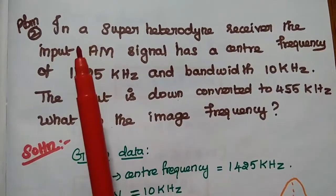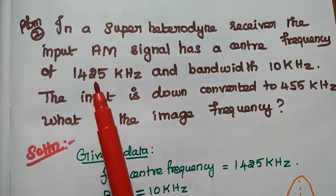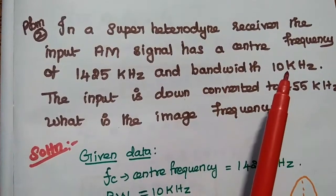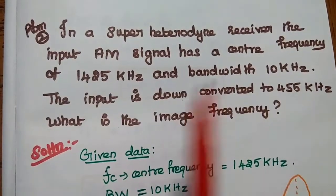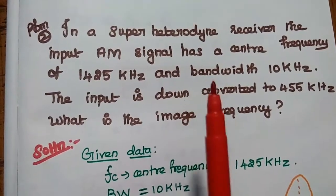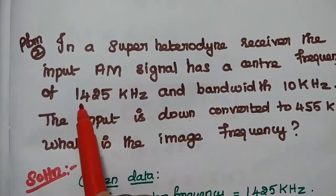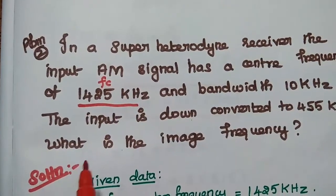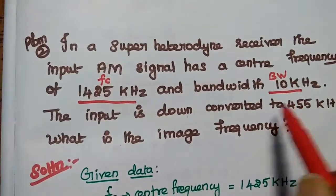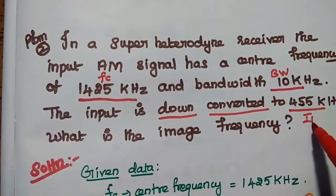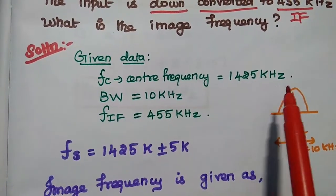The next problem: in a superheterodyne receiver, the input AM signal has a center frequency of 1425 kHz and a bandwidth of 10 kHz. The input is down-converted to 455 kHz. What is the image frequency? The given data: center frequency of the signal is 1425 kHz, bandwidth is 10 kHz, and the down-converter — that is, the IF frequency — is 455 kHz.